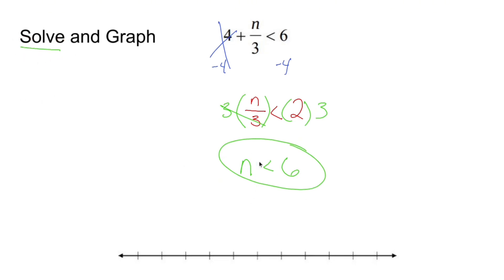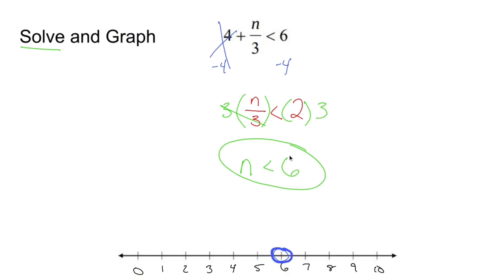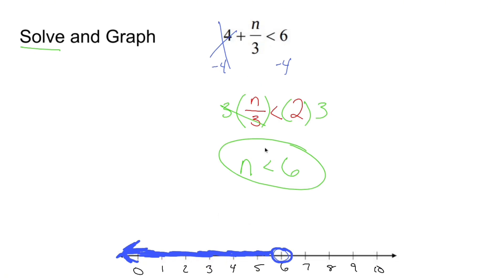Now make a number line — as long as you have 6 somewhere, you're in good shape. Fill in the rest of the numbers. N is less than 6: put a circle at 6 and do not fill it in, because we don't include 6. We include everything smaller than 6, like 5, 1, and negative 80 billion. Shade everything to the left. What this blue shading means is I can take any number that fits — like 4 — do 4 divided by 3 plus 4, and I'll definitely get a number smaller than 6.